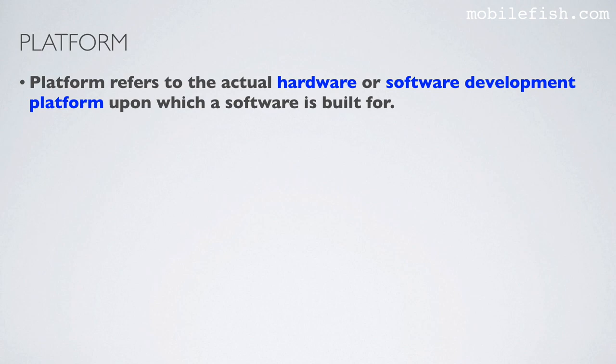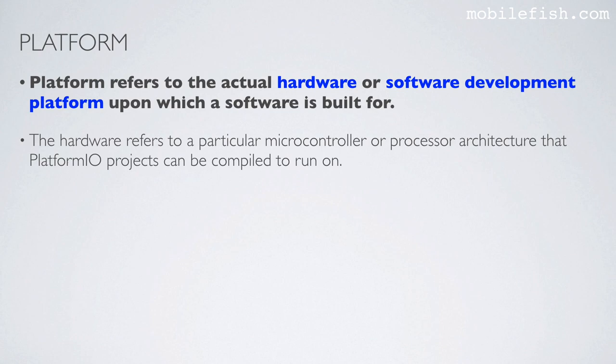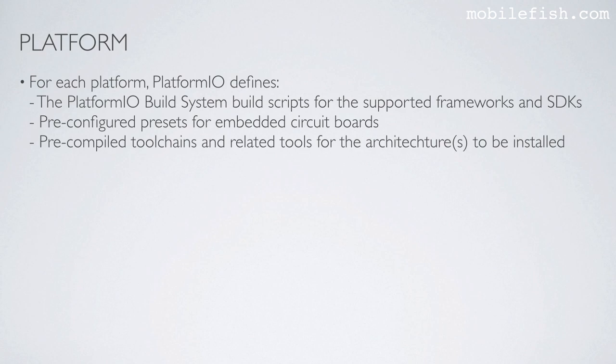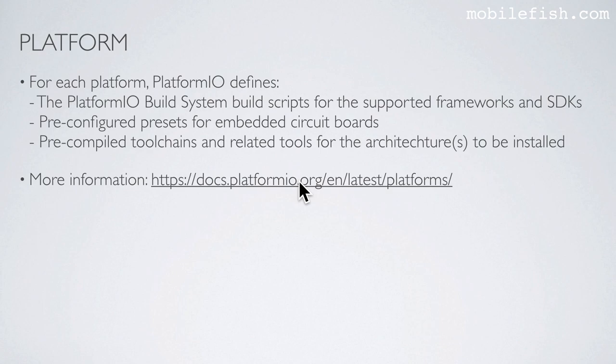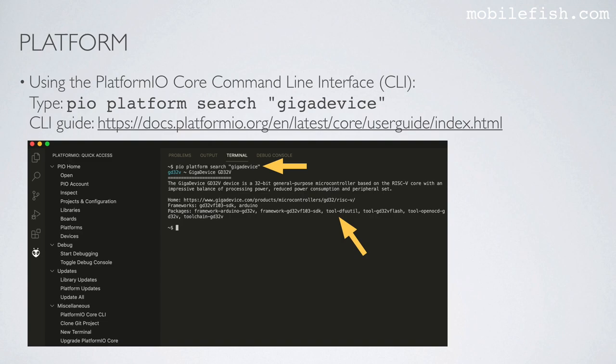A platform refers to the actual hardware or software development platform upon which software is built. The hardware refers to a particular microcontroller or processor architecture that Platform.io projects can be compiled to run on. For each platform, Platform.io defines the build system, build scripts for supported frameworks and SDKs, pre-configured presets for embedded circuit boards, and pre-compiled toolchains and related tools.